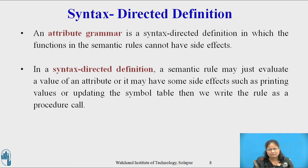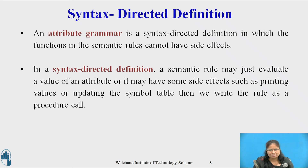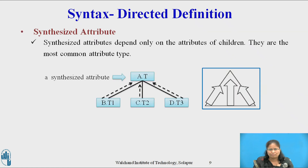An attribute grammar is a Syntax Directed Definition in which the functions in the semantic rule cannot have side effects — that is, they can only evaluate the values of the attributes. In a Syntax Directed Definition, a semantic rule may just evaluate a value of an attribute, or it may have some side effects such as printing values or updating the symbol table, in which case we write the rule as a procedure call.